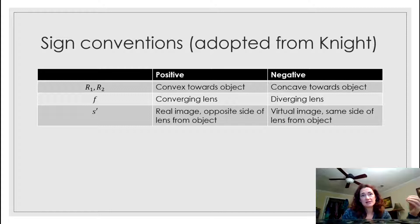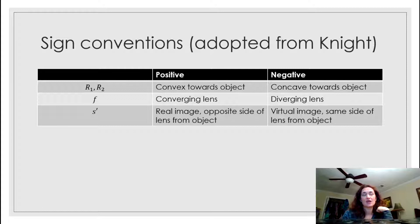F is positive if it's a converging lens — meaning the lens is fatter in the middle. F is negative if it's a diverging lens — meaning it's thinner in the middle than it is at either edge.